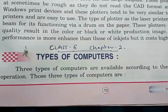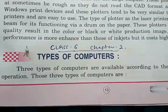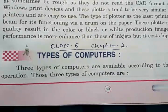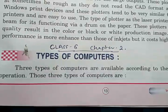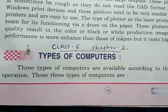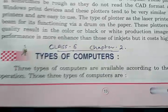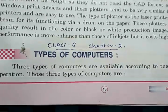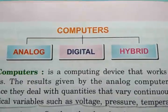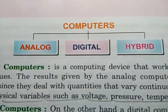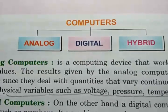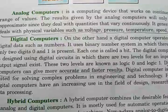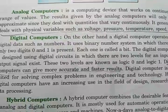Good morning students. Here I am explaining Chapter 2: Types of Computers. On the basis of signals, there are three types of computers: analog computers, digital computers, and hybrid computers.